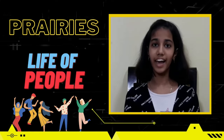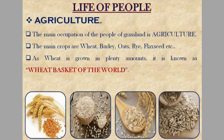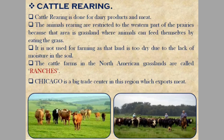Now let's understand the life of people of prairies. The main occupation of the people of the grassland is agriculture. The main crops are wheat, barley, oats, rye, flaxseed, etc. As wheat is grown in plenty, it is known as the wheat basket of the world. Cattle rearing is done for dairy products and meat. The animals are reared in the western part of the prairies because that area is grassland where animals can feed themselves by eating the grass. It is not used for farming as the land is too dry due to lack of moisture in the soil. The cattle farms in North American grasslands are called ranches.